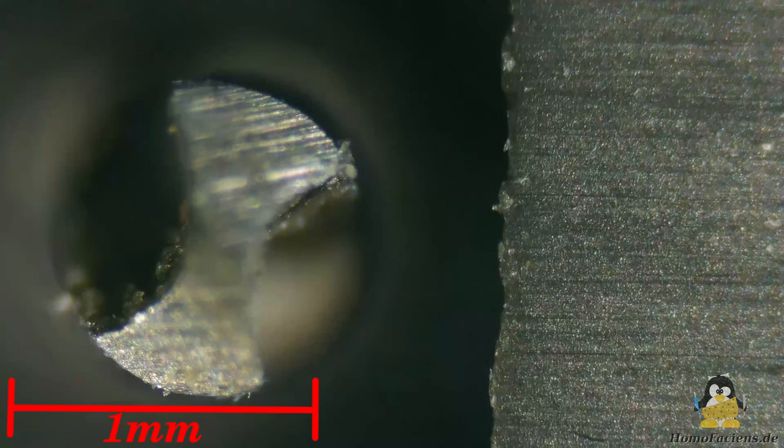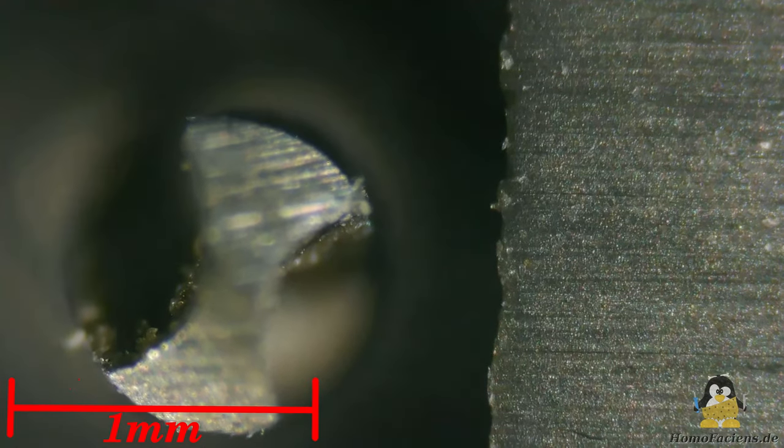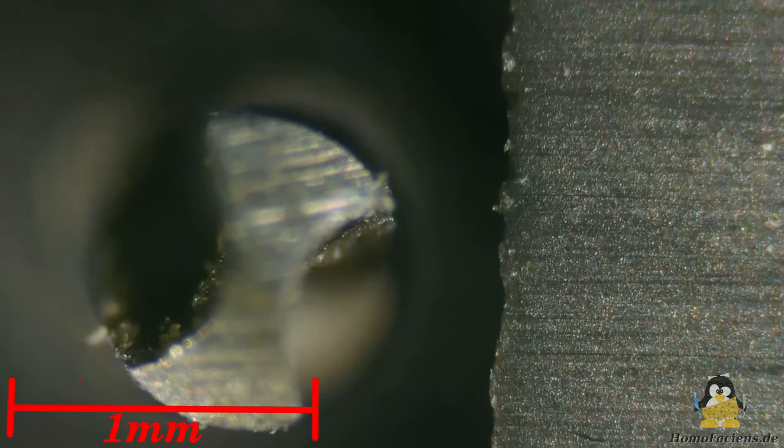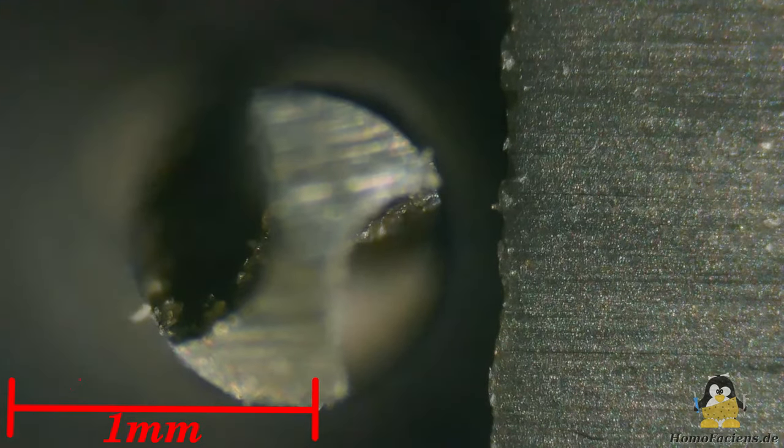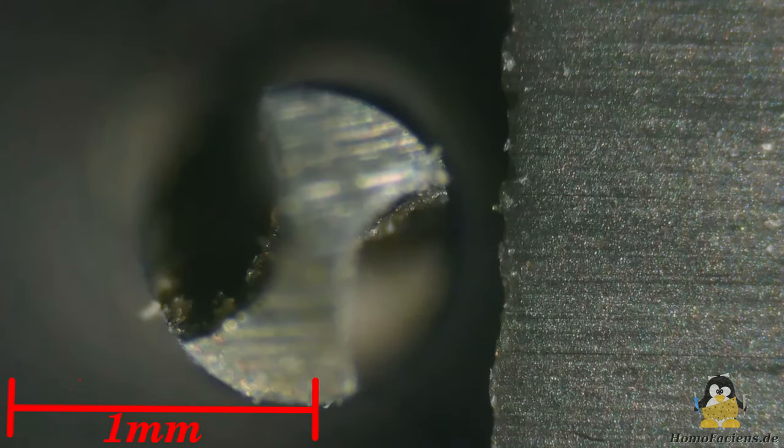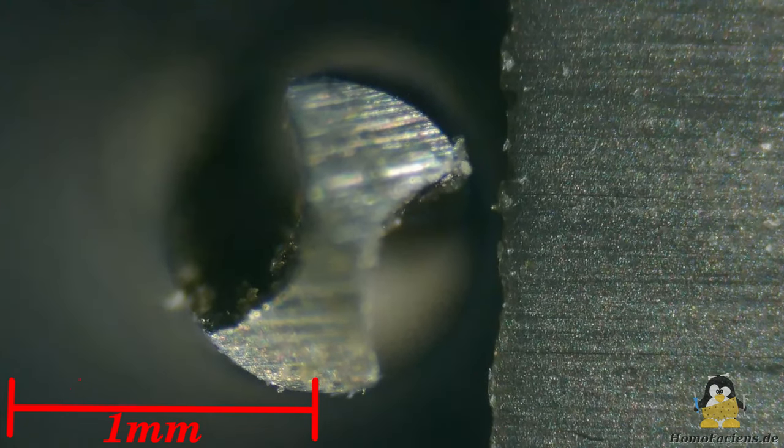If I slowly reduce the distance, we can see that the mechanism for moving the drill is not perfect. The construction wobbles a little and the focus point of the microscope shifts around the tip. At 0.2mm nothing happens. Even at 0.1mm no sparks can be seen.